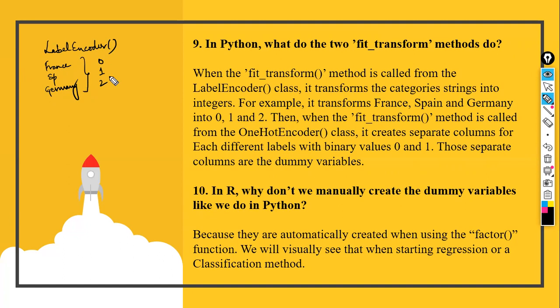In R, why don't we manually create dummy variables like we do in Python? Because they are automatically created when we use the factor function. The moment you use the factor functionality, the system understands what you need. You can visually see this when you start a regression or classification process — on the right-hand side you can view the dataset and how dummy variables are created and eliminated. R on those terms becomes very friendly compared to Python, where you must explicitly type the functionality. In R, you can directly go to plots and check how the output is developed on a ready-made basis.